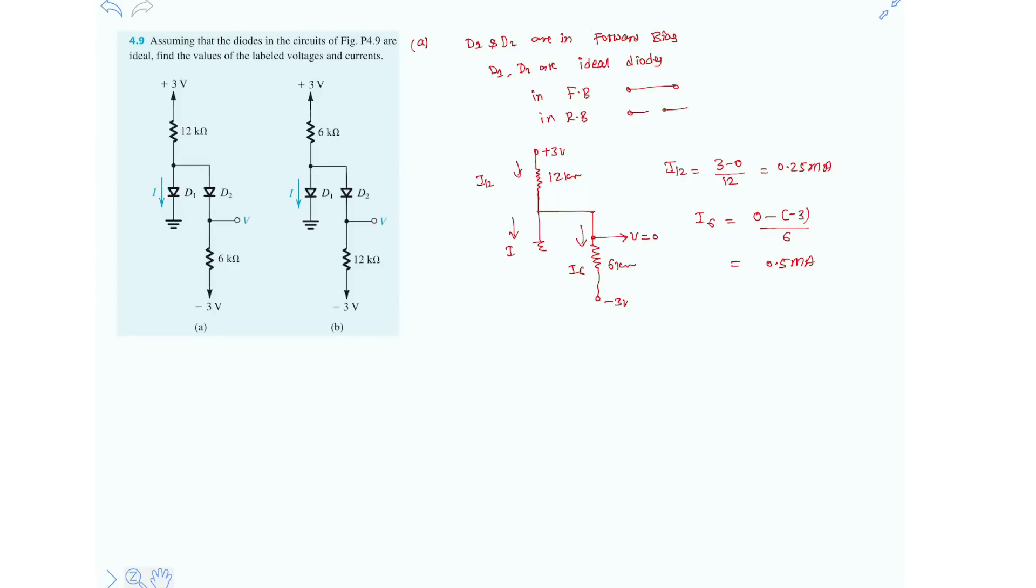So clearly, if you write KCL equation here, I must be minus 0.25mA, it should flow upward direction but which is not correct because the diode D1 is already biased in forward bias.